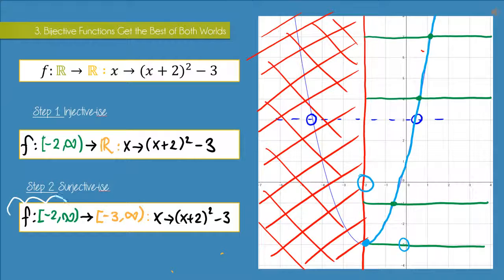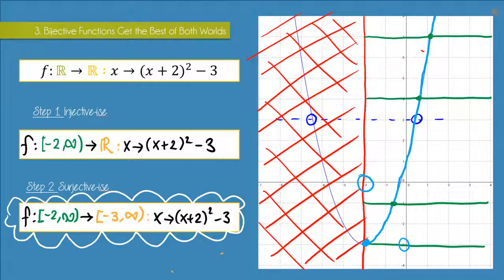So this final function we have here is the exact same one we started with. But we've just changed the domain and codomain slightly. We've restricted the domain so that all our inputs are greater than or equal to minus two and our function becomes injective. And then we restricted the codomain to make it equal to the range so that the function is surjective. And once the function is both injective and surjective, then we can say it is bijective.